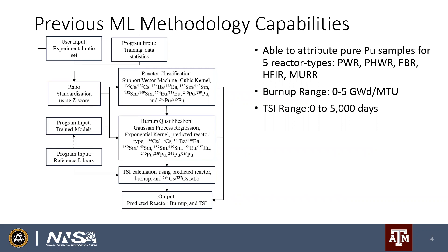There has been previous work done on methodology development at Texas A&M. Our most recent machine learning attempt has produced a methodology able to attribute pure plutonium samples for five different reactor types: three generic designs — PWR, PHWR, and FBR — as well as irradiation positions at two research reactors, HFIR and MURR, at Oak Ridge and University of Missouri respectively.